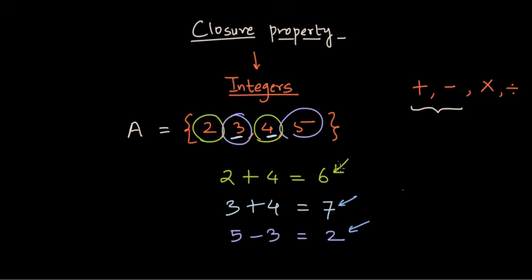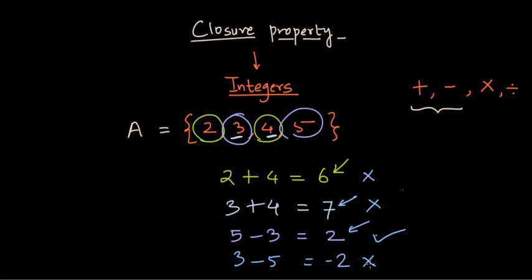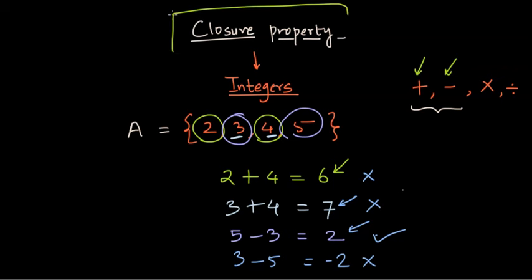Now let's look at all these results. Do we find them in set A? Six is not present, seven is not present, and two is present — but for every subtraction would the result be in the set? If we wrote three minus five instead, we'd get minus two, which is also not in the set. When results are not in the set, we say the operation is not closed for that set. When the outputs are present in the set, we say the closure property is satisfied.